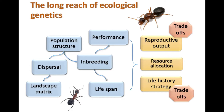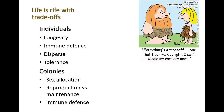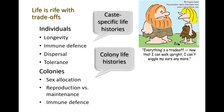Life is rife with trade-offs, and when we work with social insects there are additional factors not encountered with solitary animals. We have individuals and colonies, which means we have class-specific life histories acting at the level of individuals — sexual individuals and workers in terms of inclusive fitness try to maximize fitness. On the other hand we have colony life histories: colonies have to make decisions on sex allocation, reproduction versus maintenance, and in some cases immune defense. Individuals also have their own longevity, dispersal, and tolerance of environmental factors that shape individual and colony fitness.